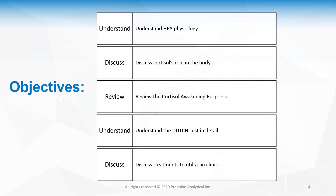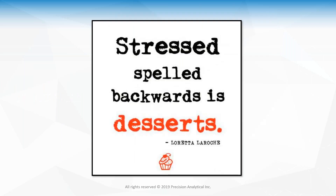The objectives are: first, a quick HPA physiology recap to discuss cortisol's role in the body; to review the cortisol awakening response; understand the Dutch Test that looks at the cortisol awakening response; and of course talk about some treatments as we move through this. Remember, stress spelled backwards is desserts.